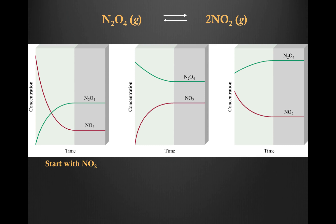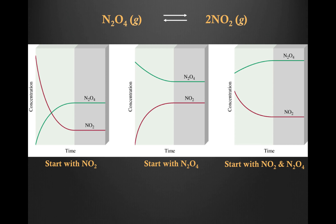In this example, you start with all NO2 and you reach equilibrium. In the next example, you start with all N2O4 and eventually you reach equilibrium. In the third diagram, you start with a mixture of NO2 and N2O4, and eventually you also reach equilibrium. What's important to note is that the relative concentrations of product and reactant have to be the same in all three examples. The concentrations don't have to be identical, but the ratio between the concentrations of product and reactant have to be the same.